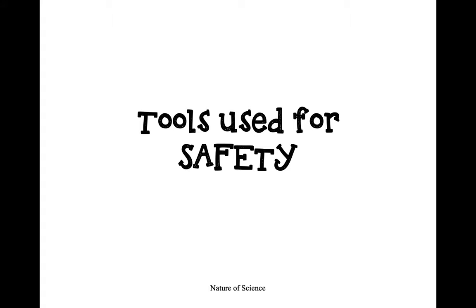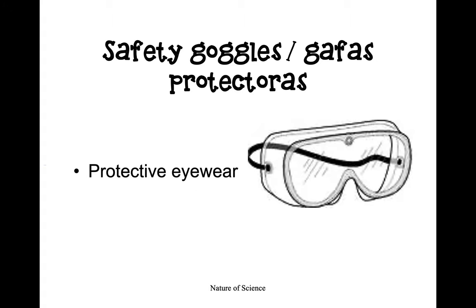To begin, we'll discuss tools that are used for safety. Remember, being safe is our number one priority when we are working in a lab. The first type of protective equipment is safety goggles. Safety goggles are a type of protective eyewear that keep any harmful substances out of our eyes. They form a barrier that keeps the bad stuff out and the good stuff in.